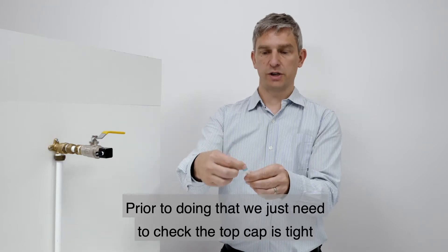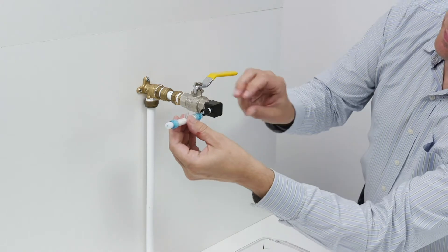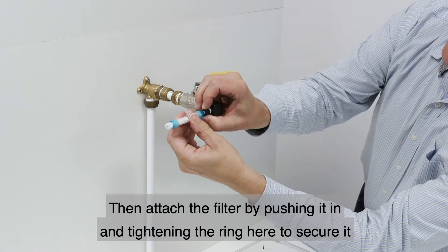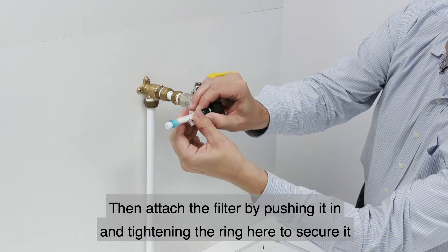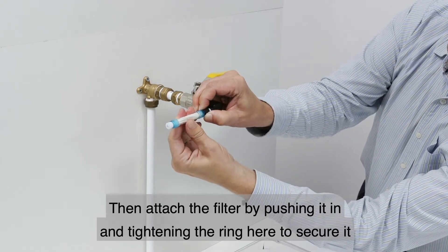Prior to doing that, we just need to check if the top cap is tight. Then attach the filter by pushing it in and then tightening the ring here to secure it.